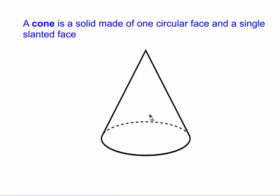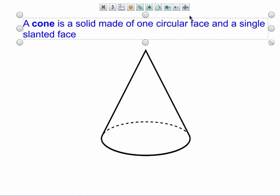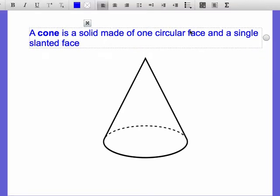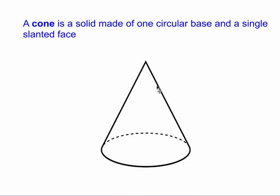It is a solid that is made of one circular base and a single slanted face. This wrapped outside is like one singular slanted face.